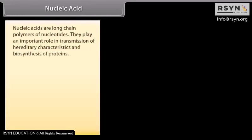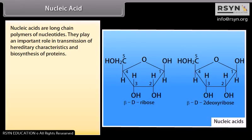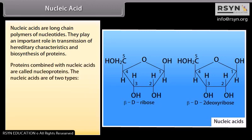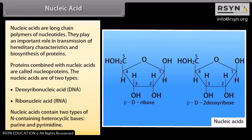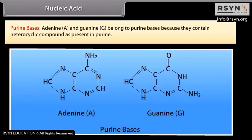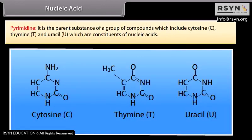Nucleic acids are long chain polymers of nucleotides. They play an important role in transmission of hereditary characteristics and biosynthesis of proteins. Proteins combined with nucleic acids are called nucleoproteins. The nucleic acids are of two types: deoxyribonucleic acid (DNA) and ribonucleic acid (RNA). Nucleic acids contain two types of nitrogen-containing heterocyclic bases: purines and pyrimidines. Purine bases include adenine and guanine. Pyrimidine bases include cytosine, thymine, and uracil, which are constituents of nucleic acids.